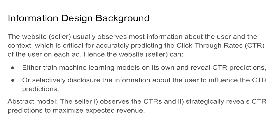That is, the seller can either train machine learning models to predict CTRs and reveal the predictions to other parties, or the seller can selectively disclose information to influence the CTR predictions done by other parties. To understand the power of information design, we abstract away the learning details and consider a simplified two-step model. First, the seller observes the perfect predictions of CTRs, or one can simply assume the seller knows the ground-truth CTRs. Because of the randomness on the user and the context, the ground-truth CTRs are stochastic. Then the seller's problem is how to strategically reveal less accurate CTR predictions to other parties to maximize expected revenue.